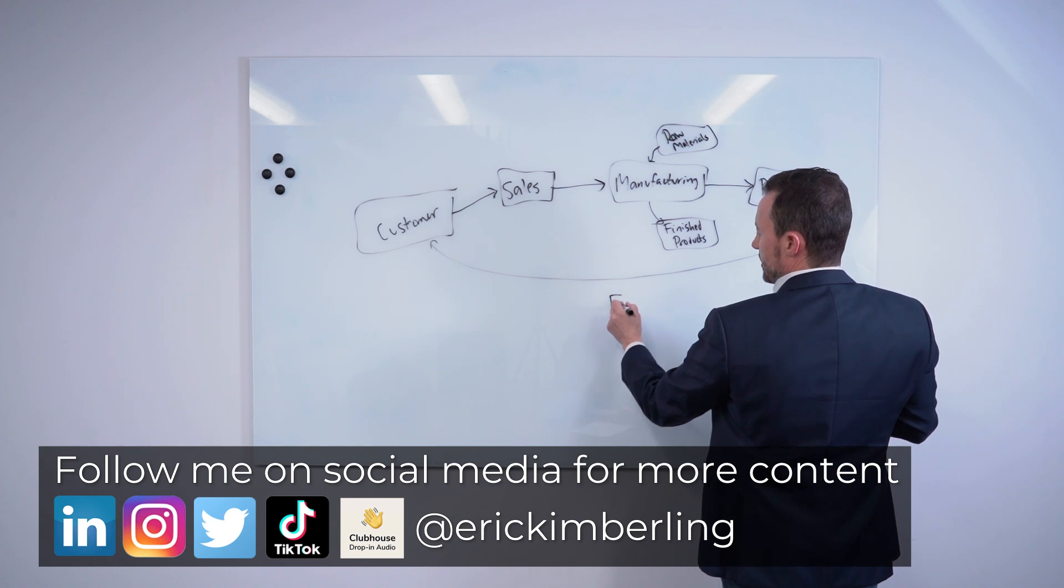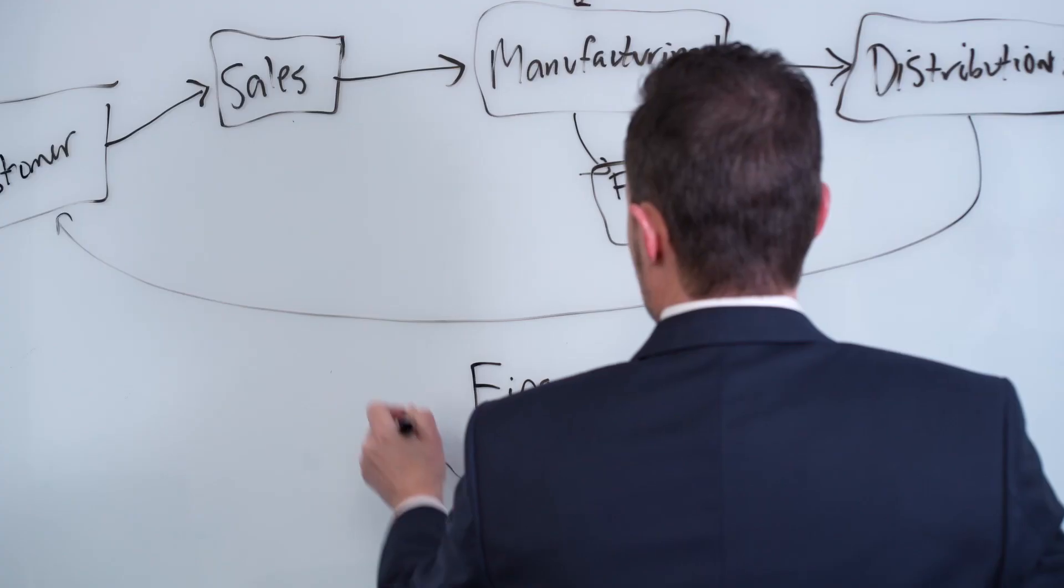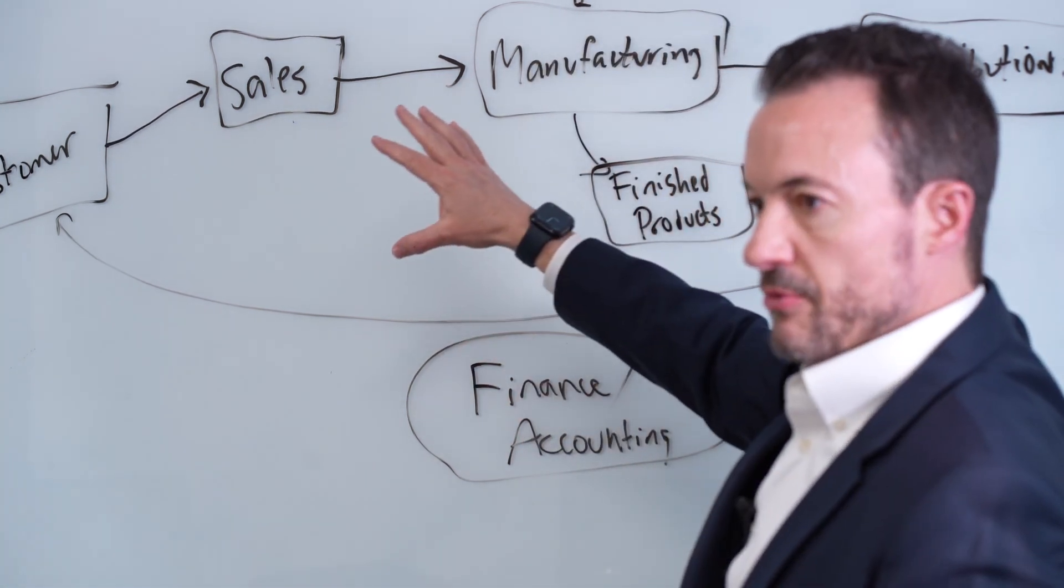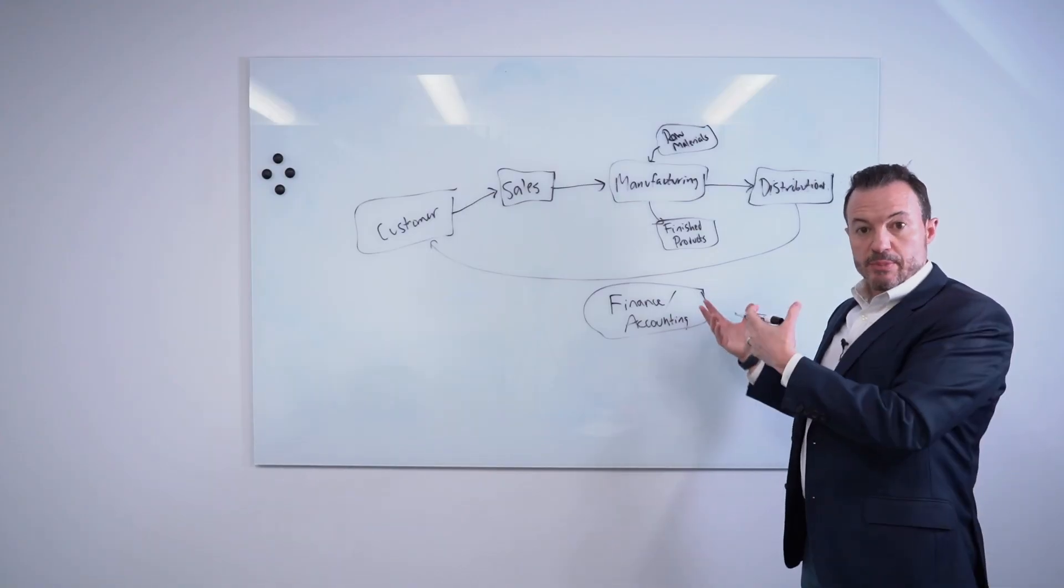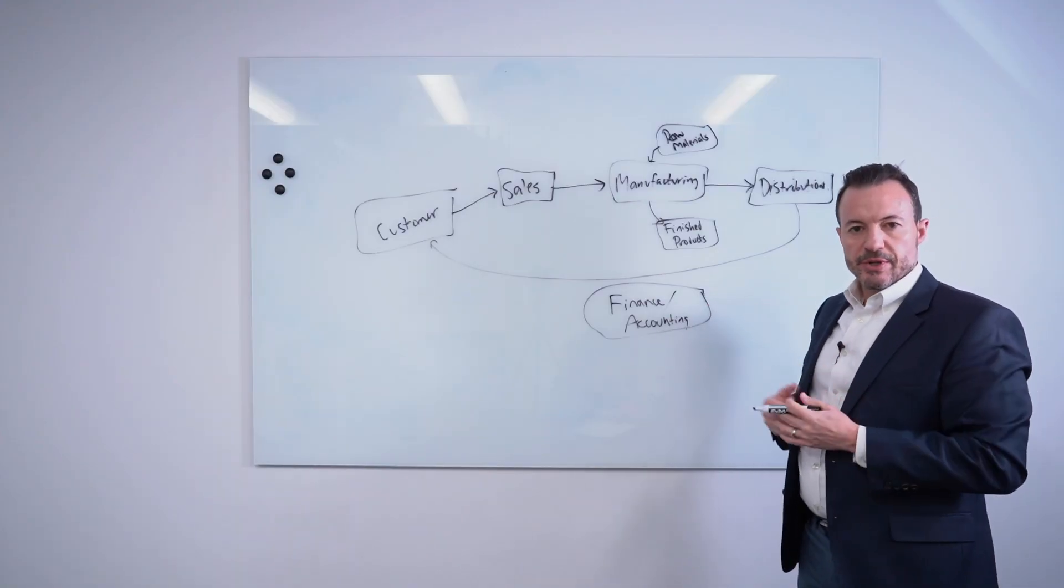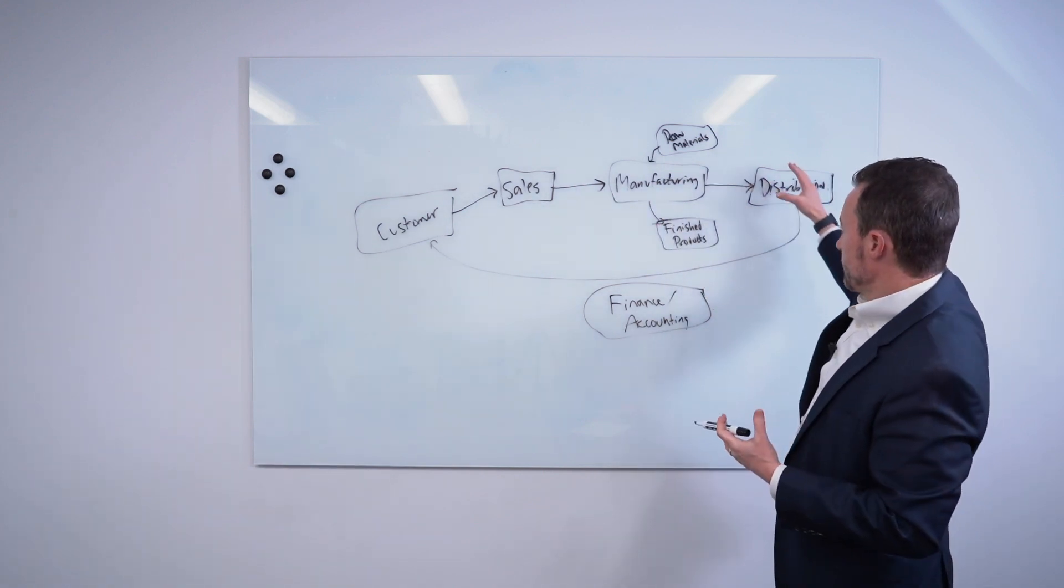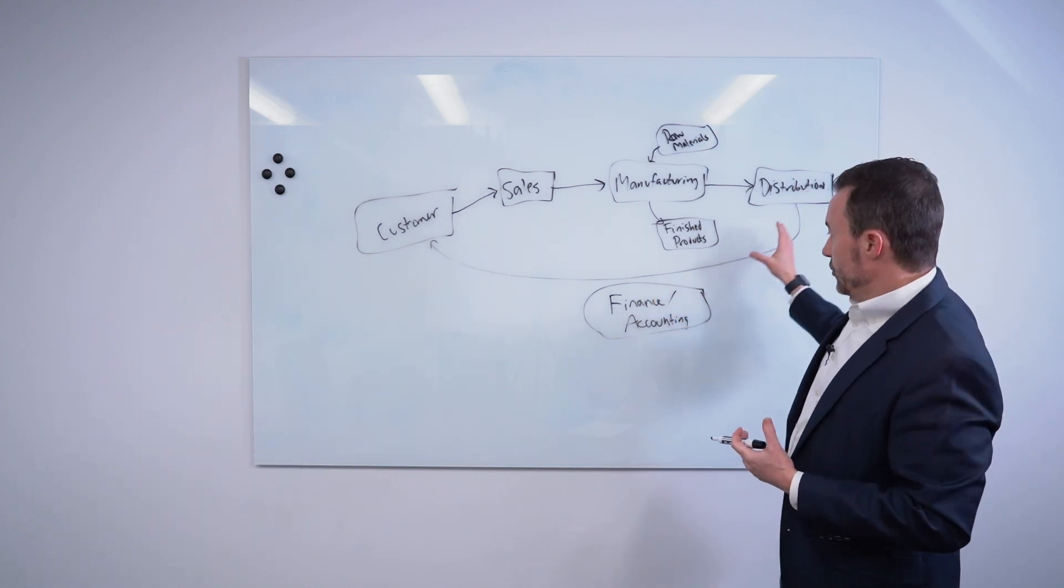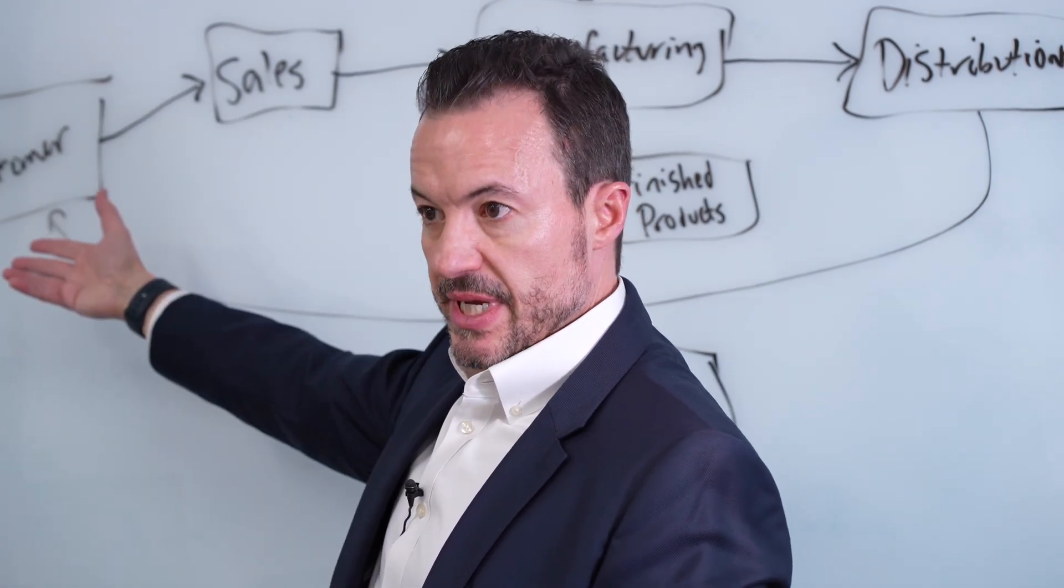And then one other thing that's worth noting too that I haven't mentioned is in addition to these processes here, sort of down here running in parallel, you've got your finance and accounting processes as well. And that's important because that's another source of data too. So finance and accounting is typically accumulating data from the supply chain and sort of providing that rear view mirror approach or understanding of what has happened within the organization over a period of time.